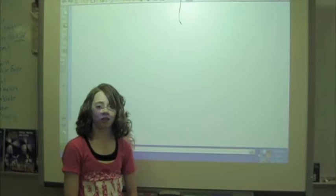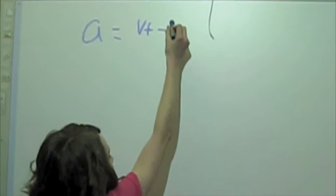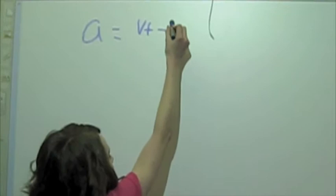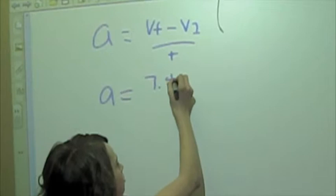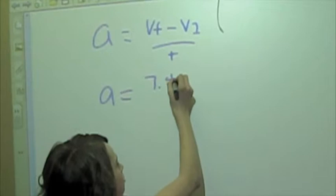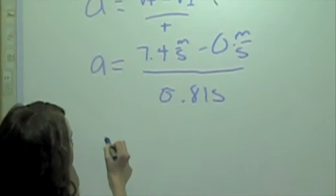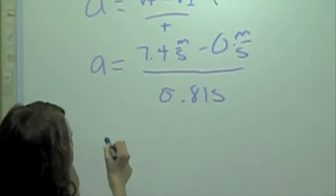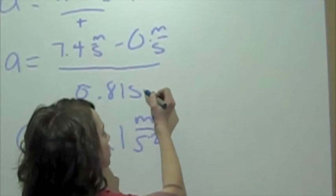Now, I'm going to show you the formula for acceleration. The formula is a equals final velocity minus initial velocity, divided by the time. So, now I substitute the numbers. So, it's 7.4 meters per second subtract 0 meters per second, divided by 0.81 seconds. The answer for my acceleration is 9.1 meters per second squared.